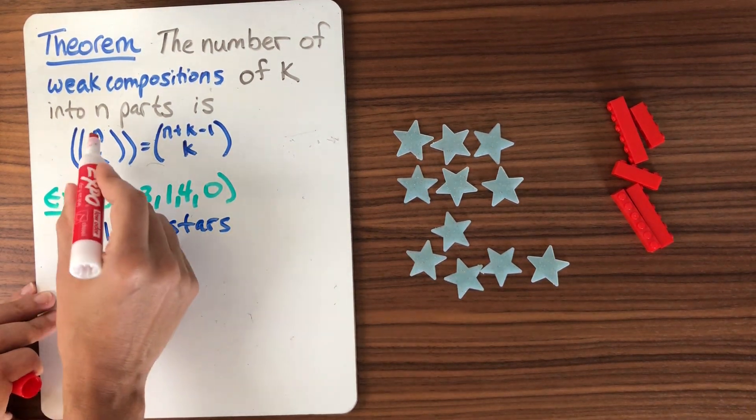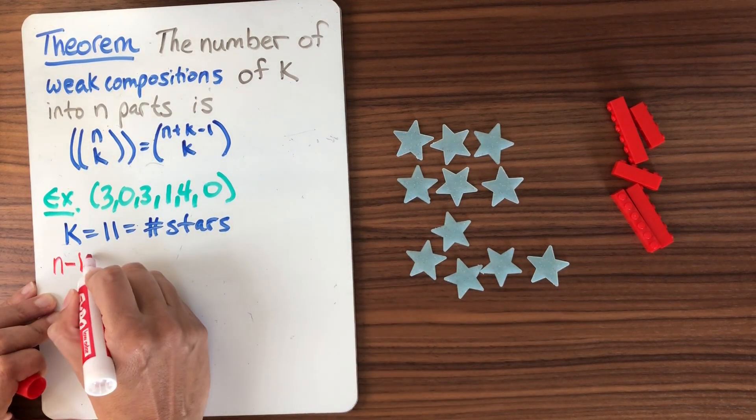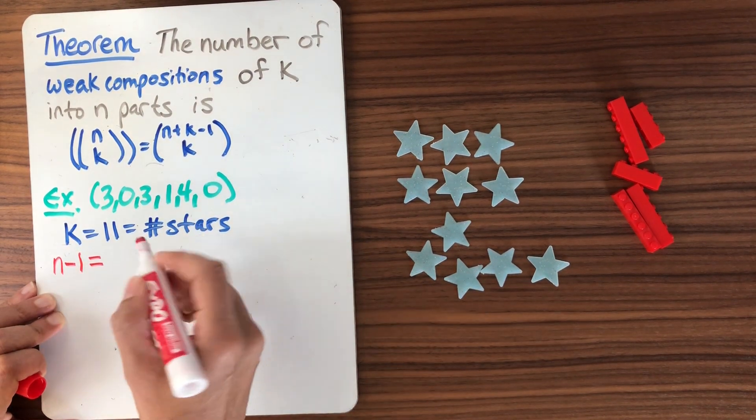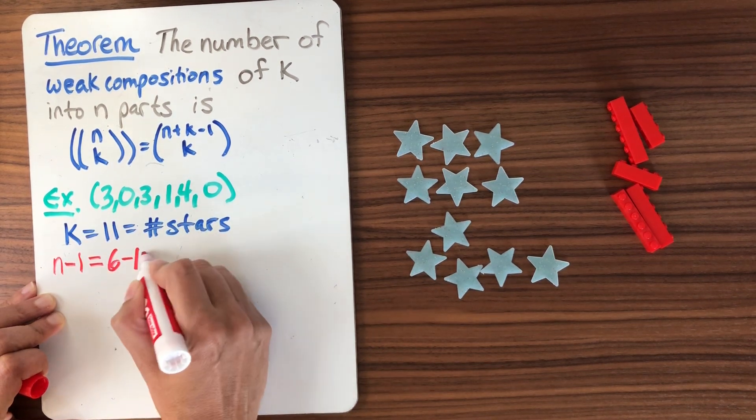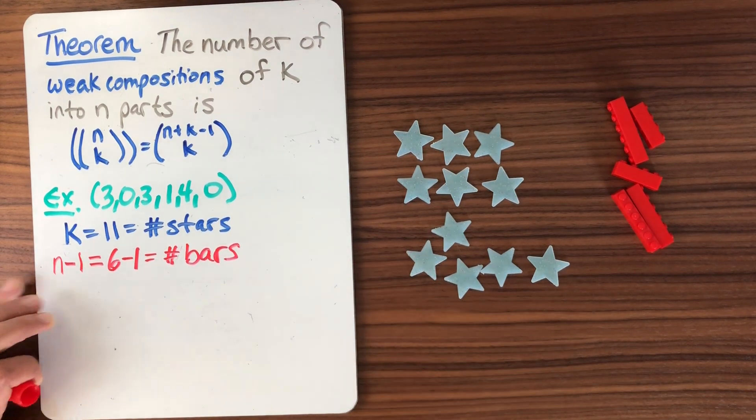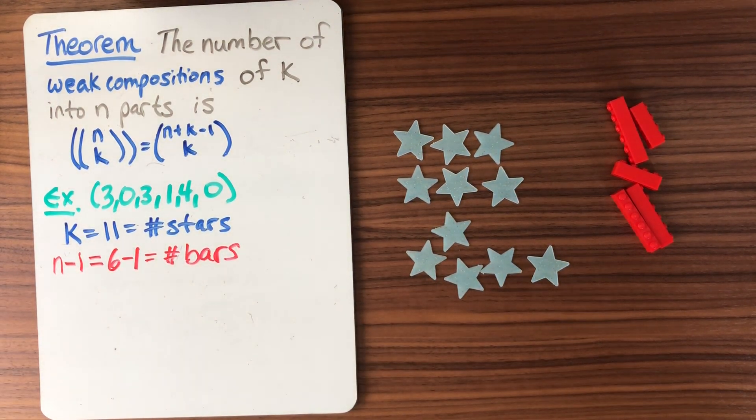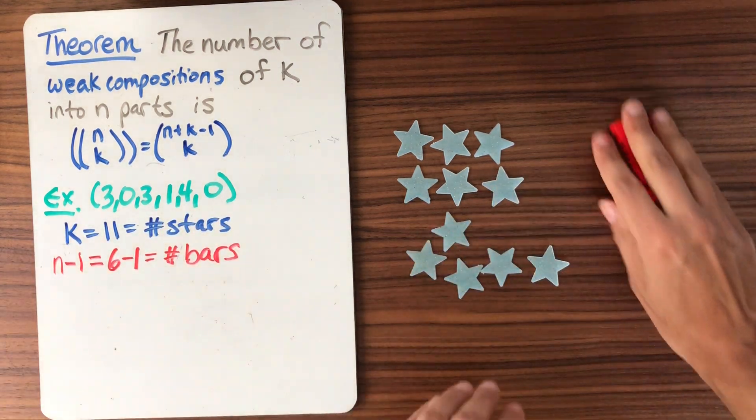Now, how do we get bars? Well, the stars and bars argument has not n bars, but n minus 1. The spaces between your stars are where you put the bars. n minus 1 in this case, let's see, n is 6. So this is going to be 6 minus 1 is equal to the number of bars. And we can check that I do indeed have five bars. So I've planned ahead.